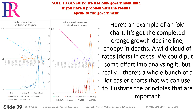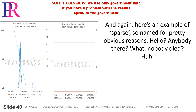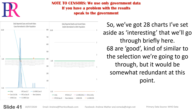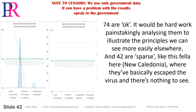Here's an example of an OK chart. It's got the completed orange growth decline line, but choppy in deaths, a wild cloud of rates — dots in cases. We could put some effort into analysing it, but there's a whole bunch of easier charts we can use to illustrate the important principles. And here's an example of sparse, so named for pretty obvious reasons — hello, anybody there? Nobody died? We've got 28 charts set aside as interesting that we'll go through briefly here. 68 are good. 74 are OK. And 42 are sparse, like New Caledonia, where they've basically escaped the virus and there's nothing to see.